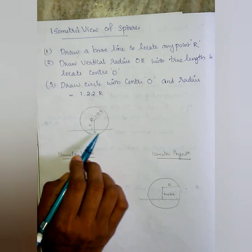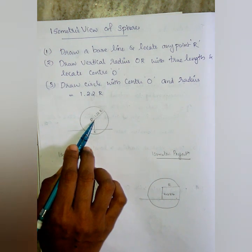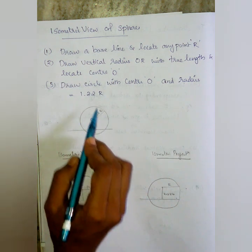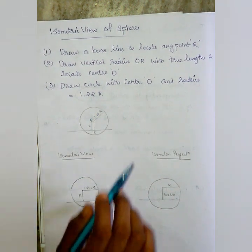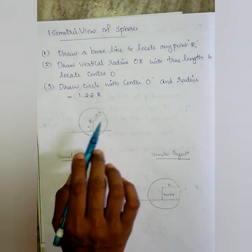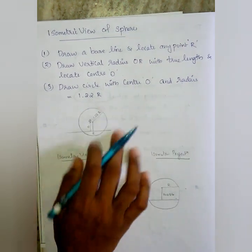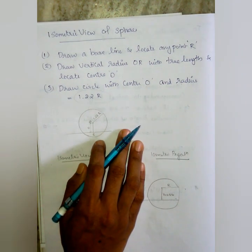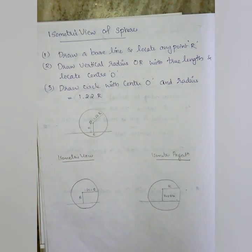R is the radius. We have a center, then 1.22R — that is 1.22 into the radius. For isometric view that value gives us the enlarged radius. This is the random method for isometric projection and isometric view.